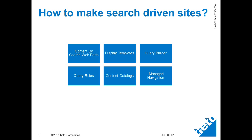So this is the slide I was talking about. How do you make a search-driven site? The other component I explained is that search has a built-in architecture. Search architecture gives you the plumbing parts, but how do you add those parts? How do you, as end users, make the search-driven sites? On the slide you see in front of you, I've mentioned six important components.